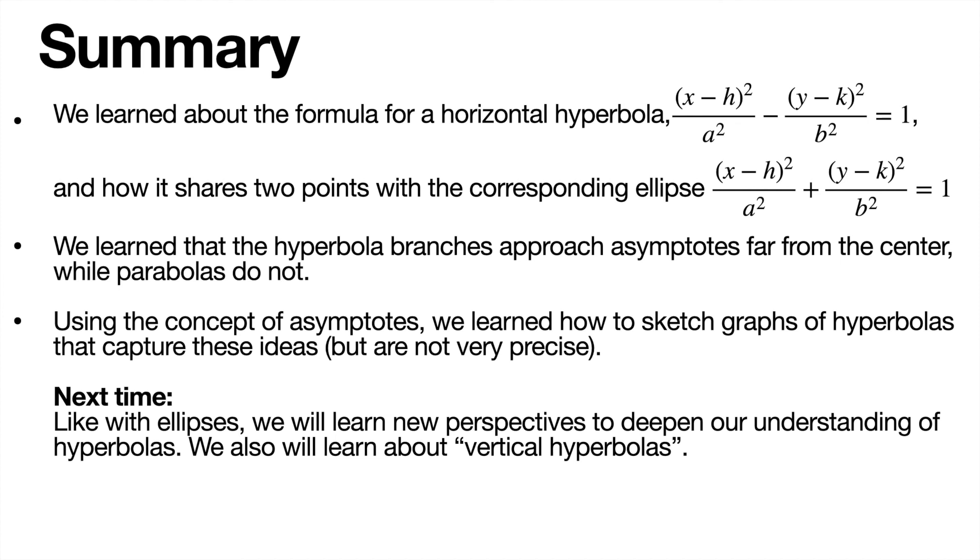So today we learned about the formula of a horizontal hyperbola and how it shares two points with the corresponding ellipse with a plus sign instead of a minus sign there, and those two shared points are the vertices of the hyperbola. We learned that the hyperbola branches approach asymptotes far from the center, while parabolas do not. So a hyperbola is not just two parabolas, they behave very differently because of those asymptotes.